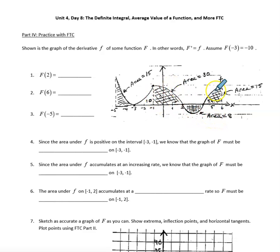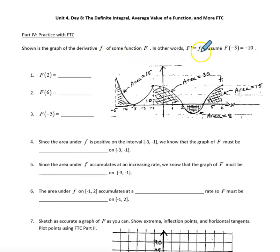This is the function little f, and we are assuming that little f is the derivative of big F, so the derivative of big F is little f. Big F of negative 3 equals negative 10 is what we are calling our starting point, or the initial condition, or the initial value.